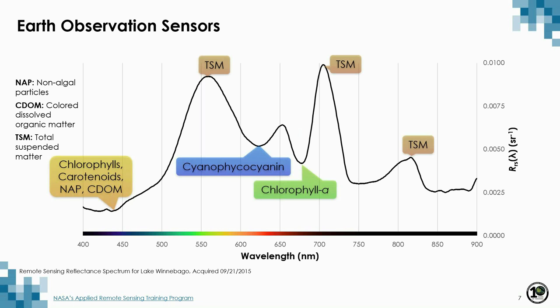If we look at a typical reflectance spectrum from Lake Winnebago, we can see that the different constituents absorb at different wavelengths. We have absorption by chlorophylls, carotenoids, non-algal particles, and CDOM in the blue spectral region. Then a very specific absorption maximum by cyanobacterial phycocyanin at 630 nanometers, one by chlorophyll A at around 670 nanometers, and characteristic peaks related to scattering by total suspended matter at 710 nanometers and 820 nanometers. This spectrum is very typical for turbid waters with algae blooms; the scattering-related peak at 820 nanometers is only found in very turbid conditions.